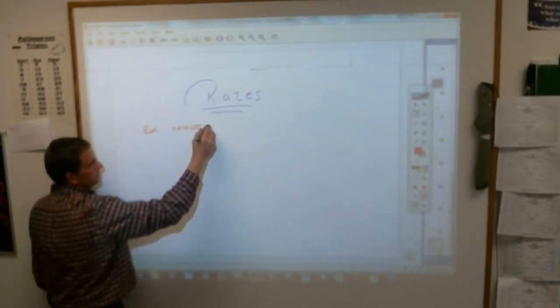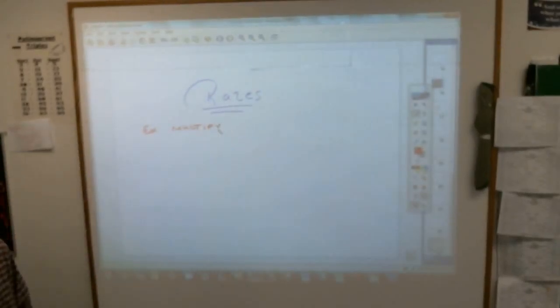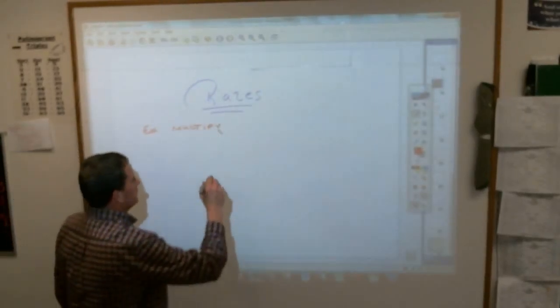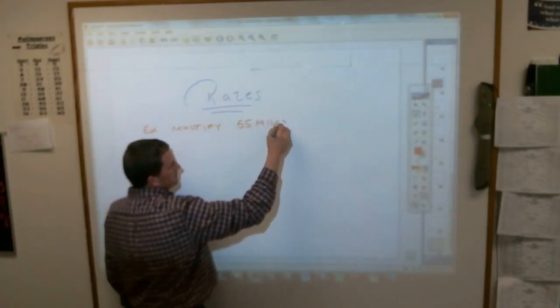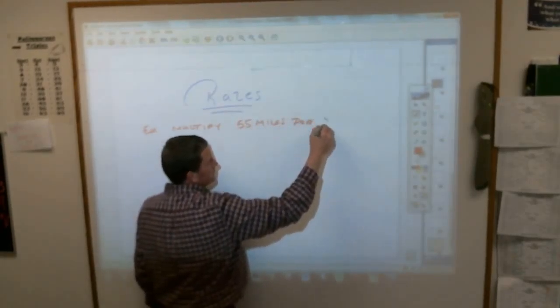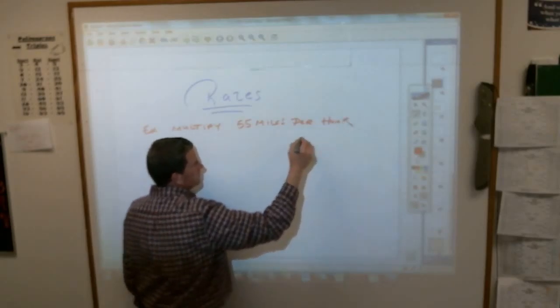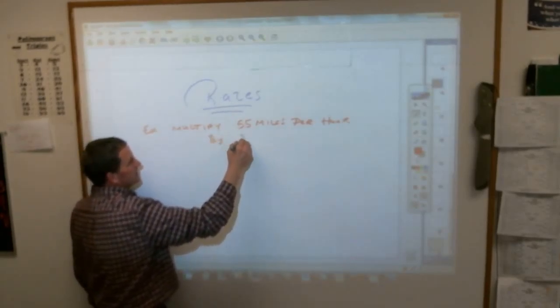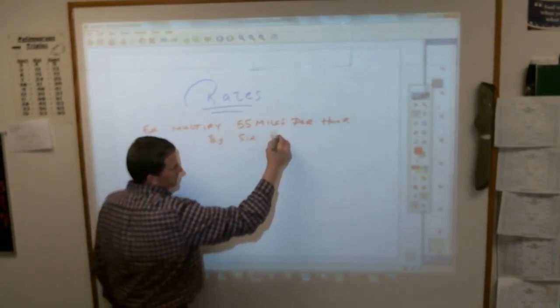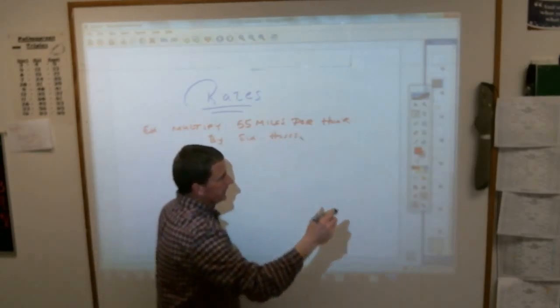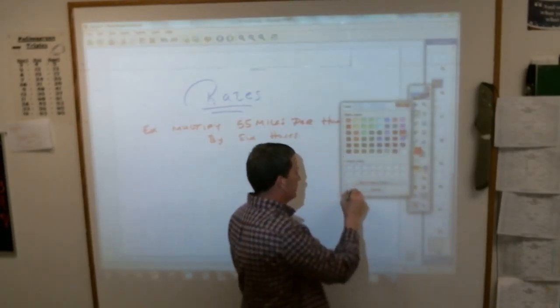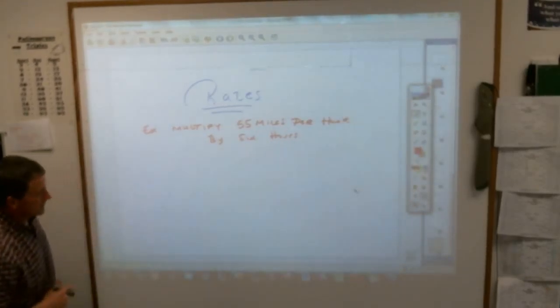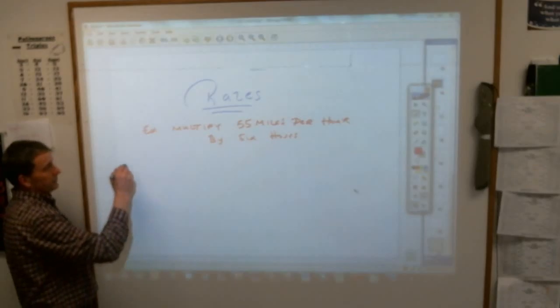Multiply 55 miles per hour by 6 hours. Now, here is where most people go wrong when they look at and do stuff like this. I'm going to write this down in big letters so you understand this.